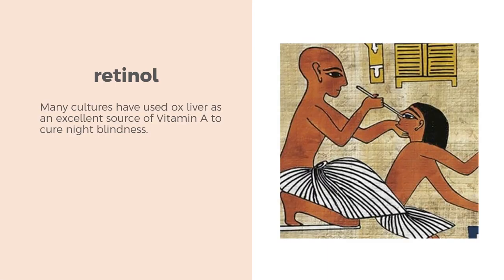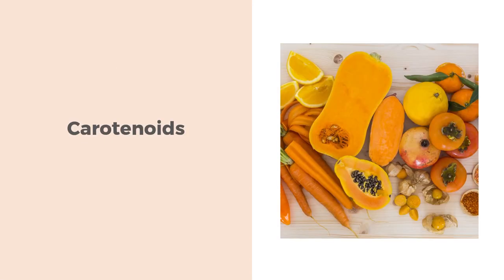Many cultures have used ox liver as an excellent source of vitamin A to cure night blindness. Beta-carotene and other carotenoids that can be converted to vitamin A by an enzymatic process in the body are referred to as provitamin A. They are found only in plant sources.